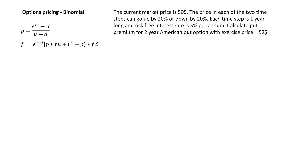The formulas are the same — we can see what changes through an example. Current market price is $50. The price in each of the two time steps can go up by 20% or down by 20%. Each time step is one year long and risk-free interest rate is 5% per annum, so R is equal to 0.05. Calculate put premium for a two-year American put option with exercise price equal to $52. Since we can sell at $52, if the market price is less than $52 we will exercise the option.